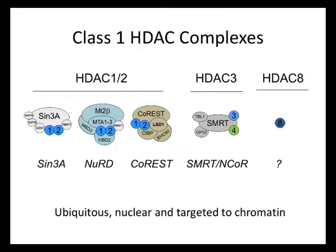The class 1 HDAC enzymes are not found as soluble enzymes in the cell — they're always part of multi-protein complexes. For HDAC1 and 2, there are three main complexes called Sin3A, NuRD, and CoREST. Apart from HDAC1 and 2, they don't share many components between the three complexes, and knockout studies in mice have told us that these three complexes are not redundant — they all have unique features.